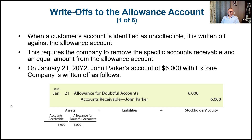On January 21st, year two, John Parker's account of $6,000 with X-Stone Company is written off. We debit allowance for doubtful accounts — instead of recording bad debt expense as in the direct write-off method — and we credit accounts receivable, cancelling the balance for John Parker's accounts receivable.